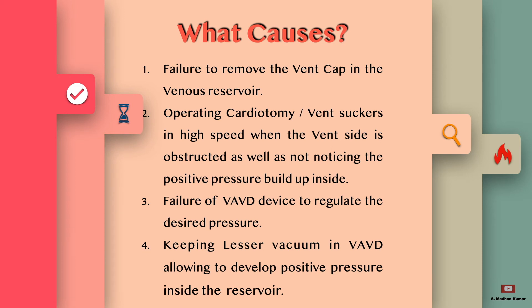What can cause this over-pressurization? A failure to remove the vent cap in the venous reservoir, or obstructing the vent side of the venous reservoir. Operating cardiotomies or vents at higher speed when the vent side is obstructed, as well as not noticing the positive pressure built up inside the venous reservoir.